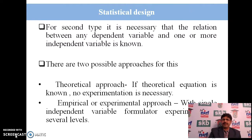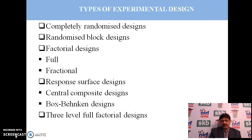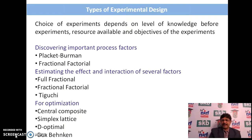For the second type, it is necessary that the relationship between any dependent variable and one or more independent variables be known. There are two possible approaches: the theoretical approach, where if the theoretical equation is known no experimentation is required; and the experimental or empirical approach, where the formulator experiments at several levels with a single independent variable. Types of experimental designs include completely randomized design, completely block design, factorial design, full and fractional factorial, and response surface designs such as central composite, Box-Behnken, 3-level, and 2-level full factorial. Choice depends on knowledge level, resources, and the objective — for example, Plackett-Burman for discovering important factors, full and fractional factorial or Taguchi for estimating effects and interactions, and central composite, simplex, lattices, D-optimal, and Box-Behnken for optimization.